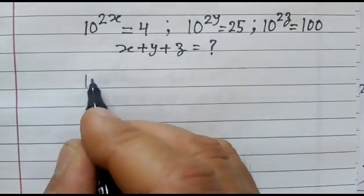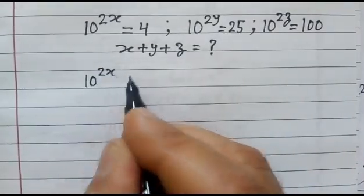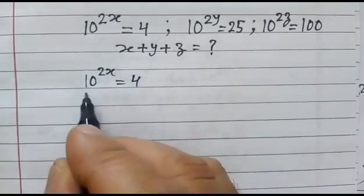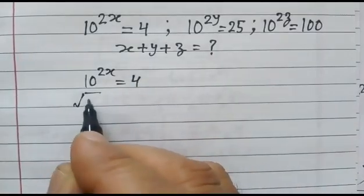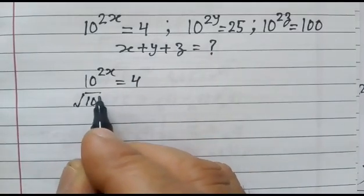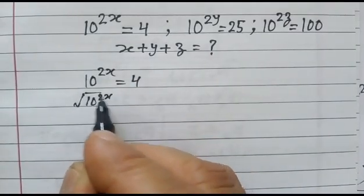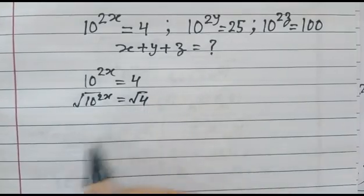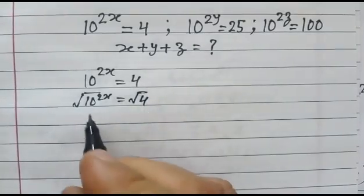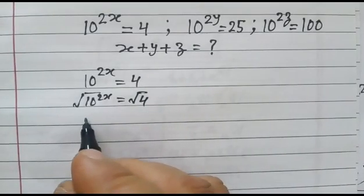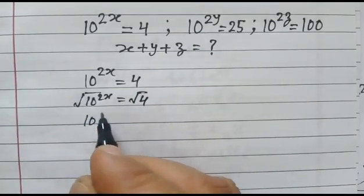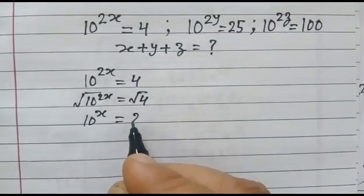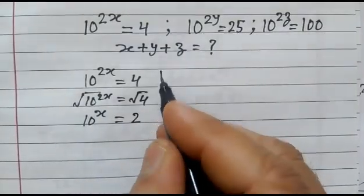As 10 to the power 2x is equal to 4, taking the square root of both sides: square root of 10 to the power 2x is equal to square root of 4. So 10 to the power x will be equal to 2.